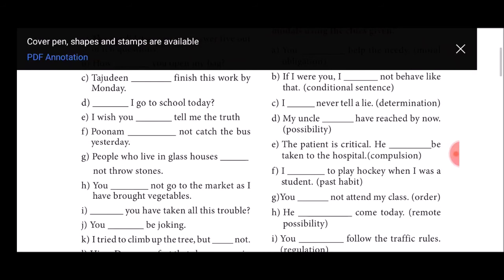D sentence: My uncle dash have reached by now. Within bracket possibility. Actually we have two possibility words: one is may or another one is might. So we can use either. My uncle may have reached or might have reached by now. E sentence: The patient is critical. He dash be taken to the hospital. Within bracket compulsion. Compulsion has two types of words: one is should or must. So he must be taken to the hospital or should be taken to the hospital.